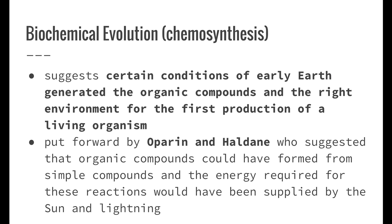Another example of a theory is the biochemical evolution theory, which is also sometimes referred to as chemosynthesis. Just like photosynthesis, the making of something using chemicals. This theory suggests that certain conditions of early Earth generated the organic compounds and the right environment for the first production of a living organism. We've already looked at the particular elements and the conditions that were present on early Earth.